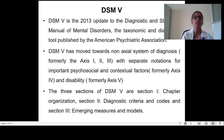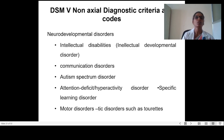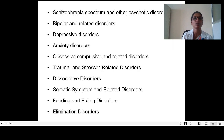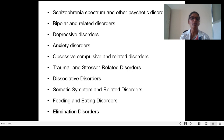Under DSM-5 non-axial diagnostic criteria and codes, the neurodevelopmental disorders include intellectual disabilities (intellectual developmental disorder), communication disorders, autism spectrum disorder, attention deficit hyperactivity disorder, specific learning disorder, and motor disorders or tic disorders. Following that: schizophrenia spectrum and other psychotic disorders, bipolar and related disorders, depressive disorders, anxiety disorders, obsessive-compulsive related disorders, trauma and stress-related disorders, dissociative disorders, somatic symptom and related disorders, feeding and eating disorders, and elimination disorders.